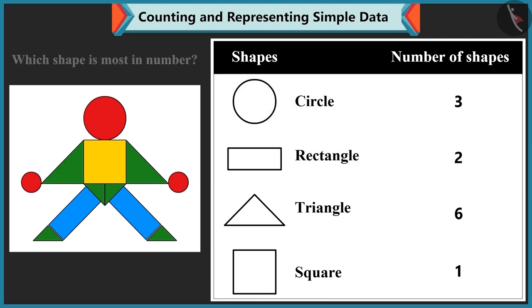Now tell me, which shape is most in number? There are 6 triangles over here. So this means, triangles are most. There is only one square. So square shape is least in number. Perfect, Bubbly.